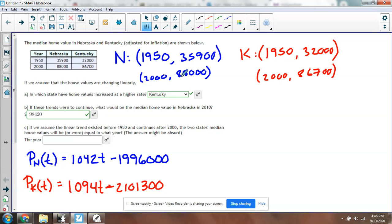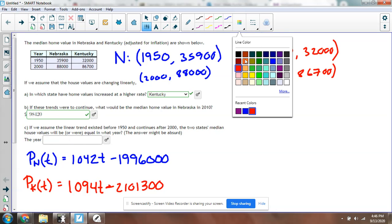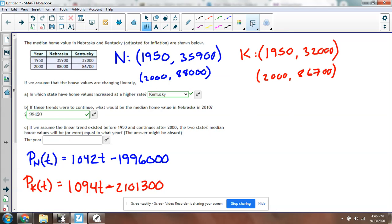What I did was I used these two blue points to find the equation of the line for the population of Nebraska. I used these two red points to find the equation of the line for the population of Kentucky. The question says if we assume the linear trend existed before 1950 and continues after 2000, when will the two states' medians be equal?